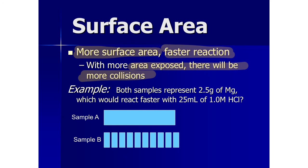sample A and sample B are supposed to be equal sized pieces of magnesium. So 2.5 grams, 2.5 grams. Sample A is a whole piece. Sample B is the same 2.5 grams, but chopped up into tinier pieces.